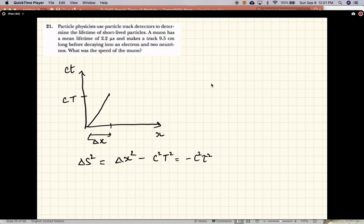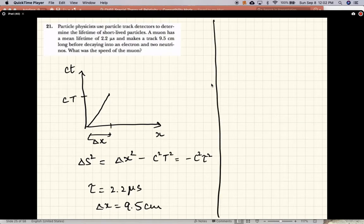And this is tau equals 2.2 microseconds. So we'll write that down: 2.2 microseconds and delta x is 9.5 centimeters. So what we have is c squared tau squared equals c squared T squared minus delta x squared.